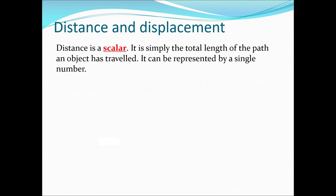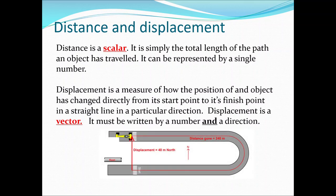Just to be clear: distance is a scalar and it includes the total distance traveled. In our race car example, the car starts, travels along the racetrack around the corner and back, giving a total distance of 240 meters. Displacement is just a measure of where you end up compared to where you started, with no information about the route you took. In this case the displacement is the vector from start to finish: 40 meters in the north direction.